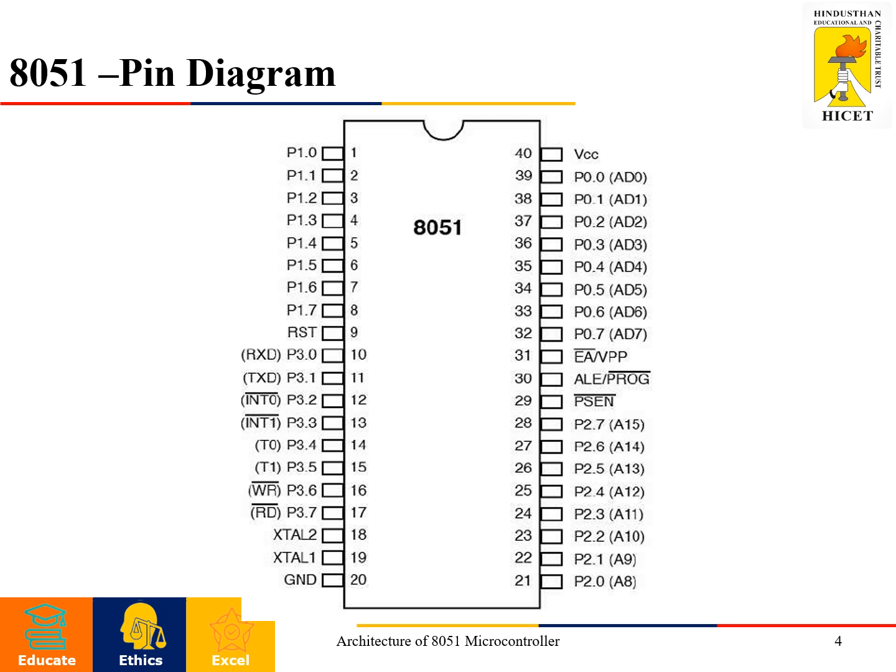Pin number 30 is for address latch enable, which is used to separate the address and data lines. Pin number 31 is for external access. If you want to connect any external device along with this controller, you can enable this pin.